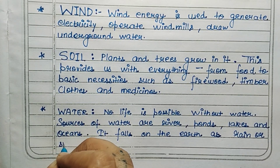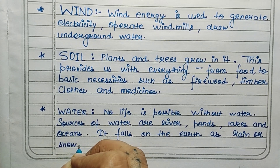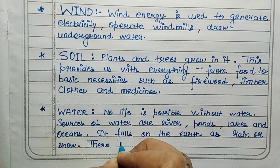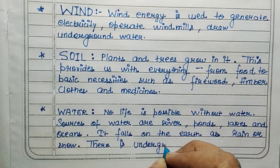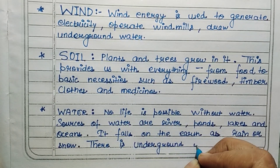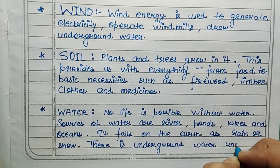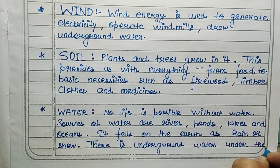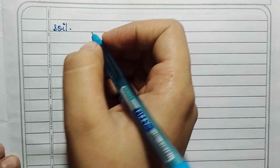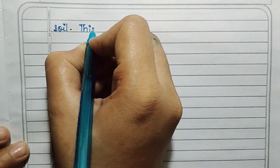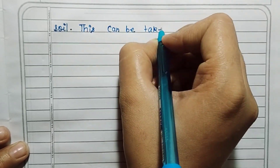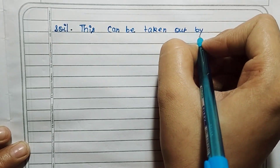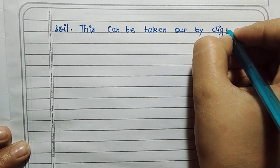No life is possible without water. Sources of water are rivers, ponds, lakes, and oceans. It falls on the earth as rain or snow. There is also underground water under the soil, which can be taken out by digging.